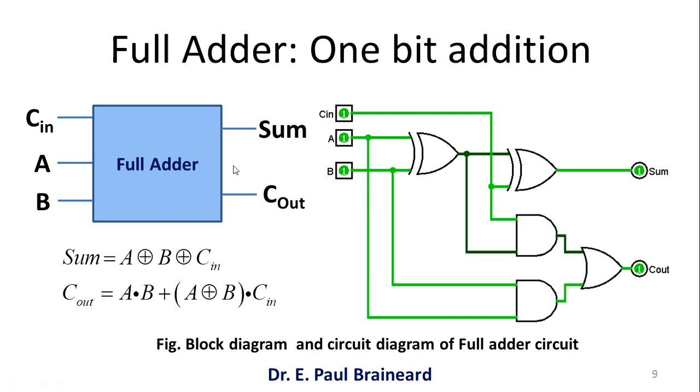The boolean expression obtained from truth table is given by sum equals a XOR b XOR c, carry out equals a dot b plus a XOR b in bracket dot cin. This particular circuit has a provision for carry bit as well and this circuit is called as full adder circuit. That is the reason why this is called as full adder circuit.